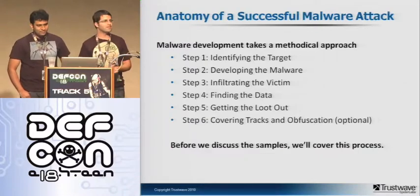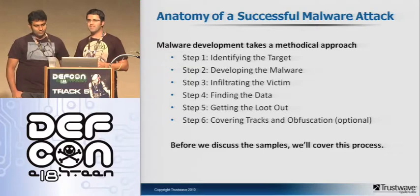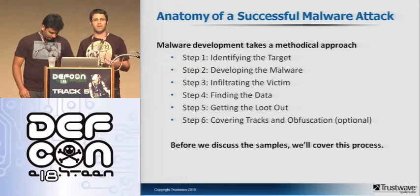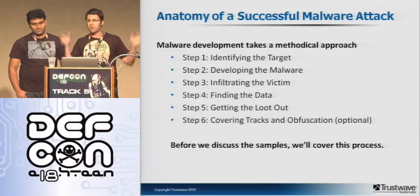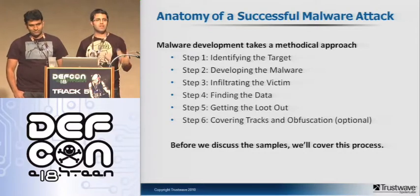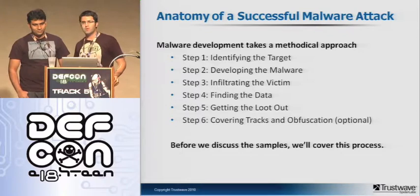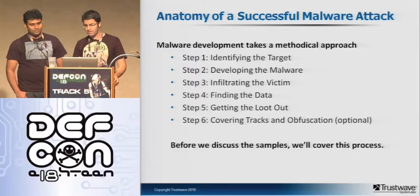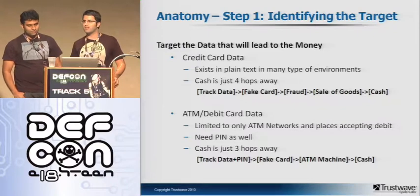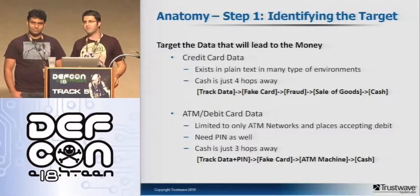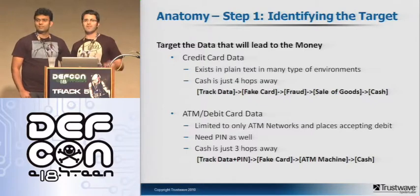Before we get into the demos, it's important to walk through what we feel is the anatomy of a successful malware attack. We took a look at malware that was successful in the last 24 months and came up with a blueprint. Step one: the authors have to identify a target. There's intellectual property, bank account information, PII, HIPAA information — a lot of data out there. But in the real world, the end goal is for someone to get money. The two big focuses we see are credit card data and ATM and debit card data.